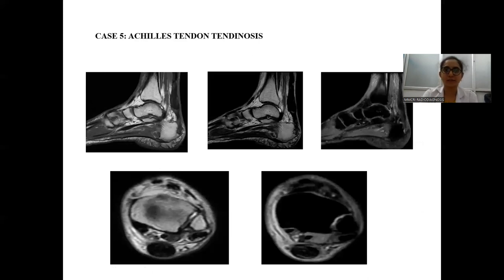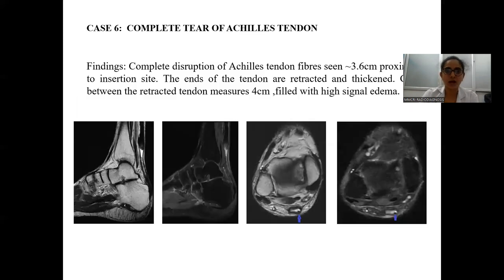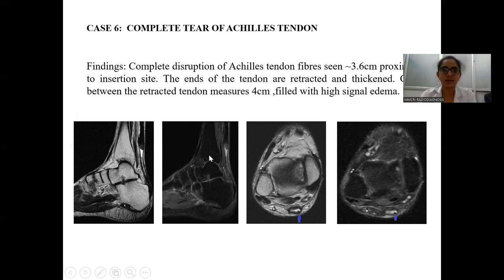The next case demonstrates Achilles tendon tendinosis. The following case shows a complete tear of the Achilles tendon with complete disruption of the Achilles tendon fibers measuring approximately 3.6 cm in length at the calcaneal insertion, well appreciated on PD images. The retracted tendon gap is filled with high signal intensity edema.